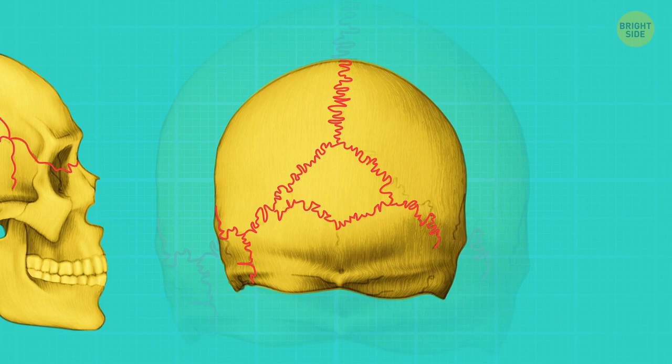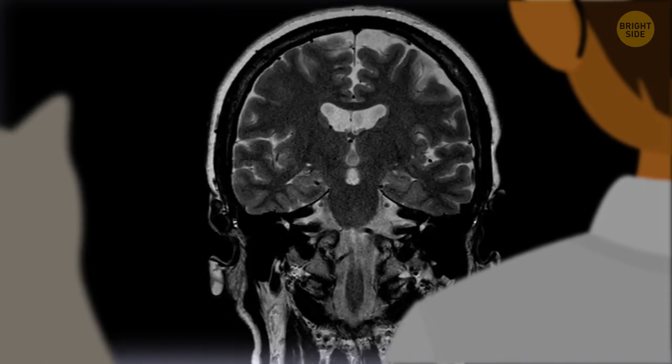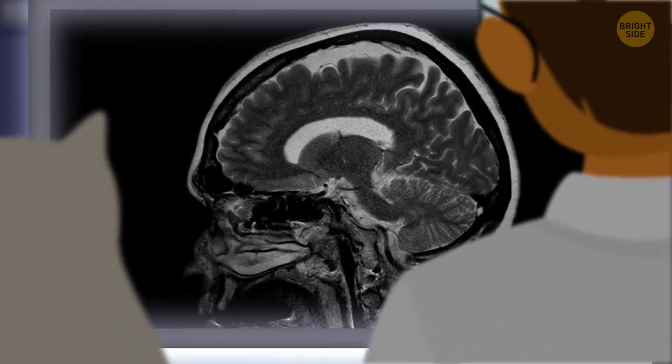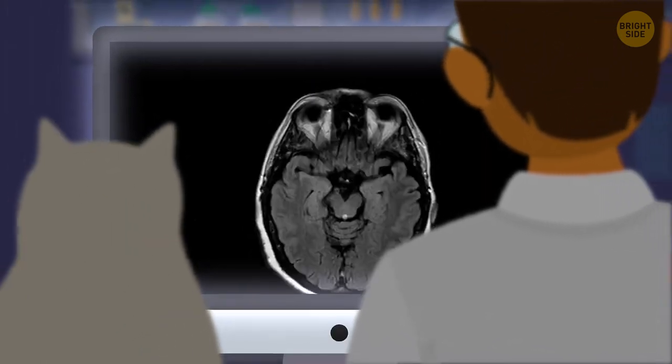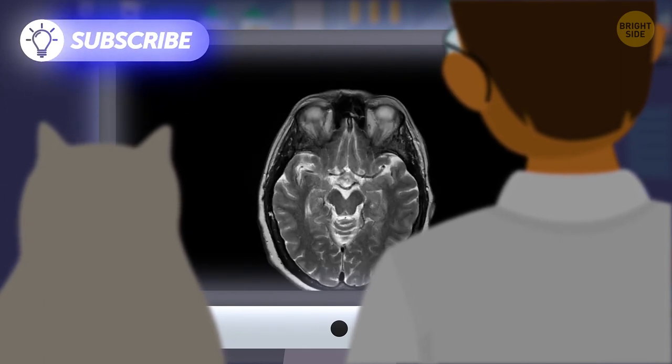Without these joints, our brain wouldn't be able to grow properly. Our skull joints aren't flexible like our knees or elbows, they hardly move at all. Not all joints are supposed to be flexible. Still, without them, life would be much different.